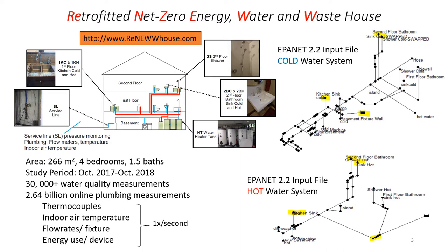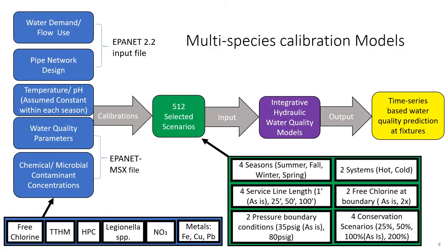The plumbing layout, pipe diameter, and pipe lengths were used to create EPA net 2.2 input files for both the cold and hot water systems, which are shown in the images on the right. The water demand and flow use were accounted for by creating demand patterns for a one-minute time interval, and along with the pipe network design, were used to create the EPA net 2.2 input file.